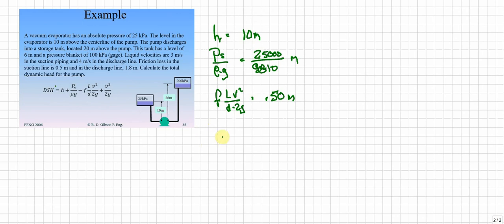Finally we end up with V² over 2G. And that gets us 3² over 2 times 9.81.